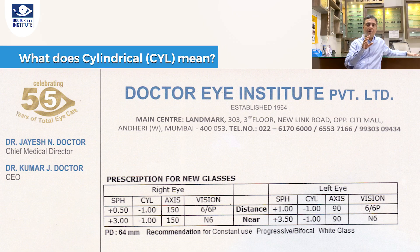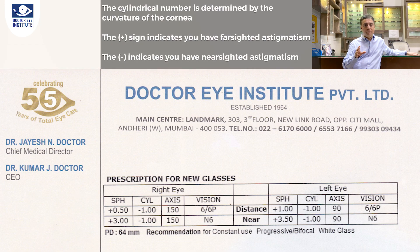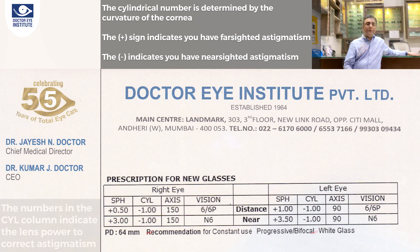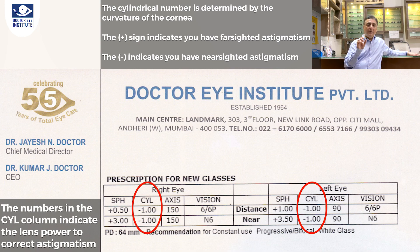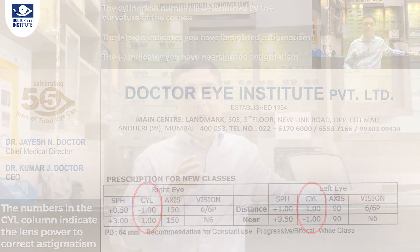The second part of the prescription is called the cylindrical number, which also has an axis. Cylinder is also called astigmatism, and it's all to do with the curvature of your cornea or your lens. The power shown in the cylinder column is the power needed to correct that astigmatism and neutralize it at that particular axis.